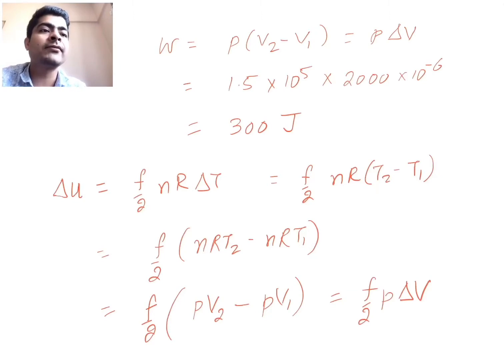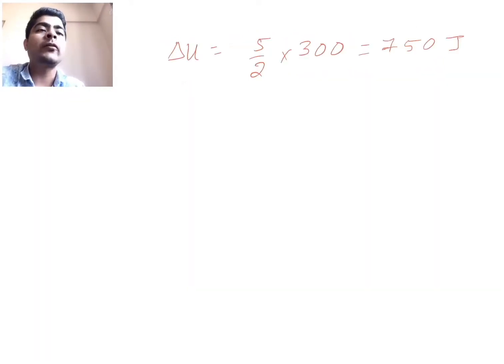Let me clarify one thing. This work done 300 joules is work done by the gas. Some people get confused whether we have to write work done by the gas or on the gas. So here I have written work done equal to P delta V, this is work done by the gas. Now according to first law of thermodynamics, heat supplied minus work done by the gas is equal to change in internal energy. So heat supplied will be how much? Change in internal energy plus W by gas.